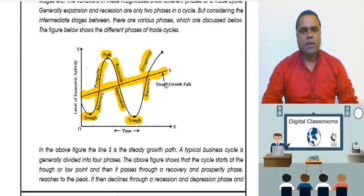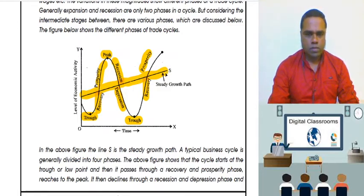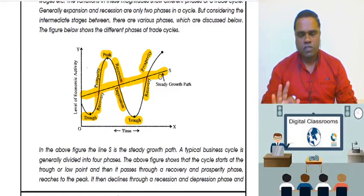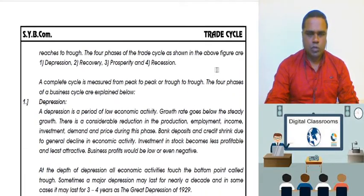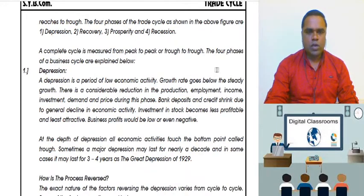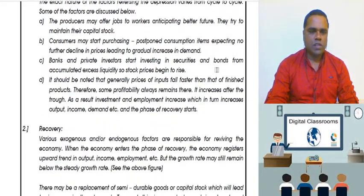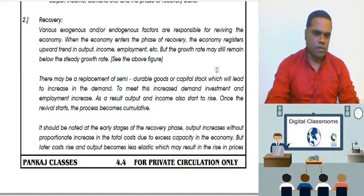Every country will always want to stay on that growth line — that is the ideal growth rate. But as I have been telling you, it is not possible for any particular economy to properly stay on that line. There will always be some ups and downs experienced. In the last lecture, I told you about depression, where every activity goes to the lowest base. The lowest base of depression is called trough, and from there the process reverses — we come towards recovery, where output, employment, and income gradually start to increase. Many internal factors were responsible for that.